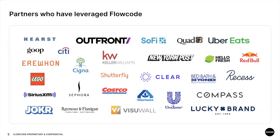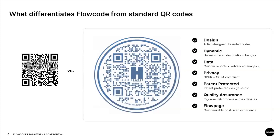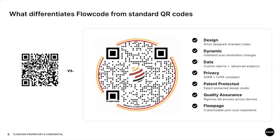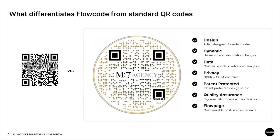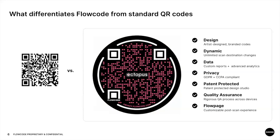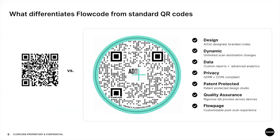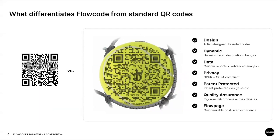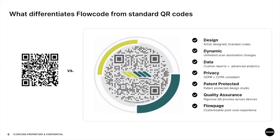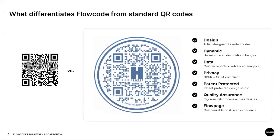The number one question we usually get about FlowCode is what really differentiates us from the standard QR code. The very first thing is our designs — our designs really set us apart from the generic QR code. As you can see on the left-hand side of the screen, we have an amazing in-house design team that can bring your brand to life, and you can see some examples on the right.